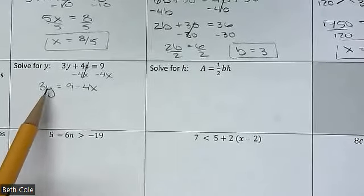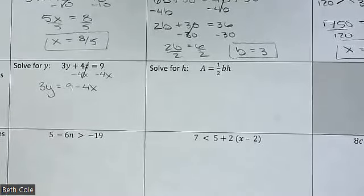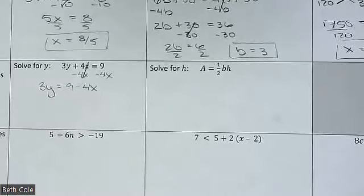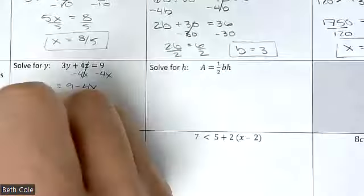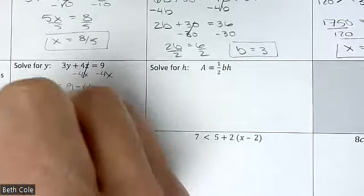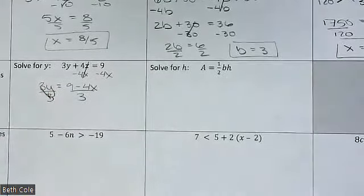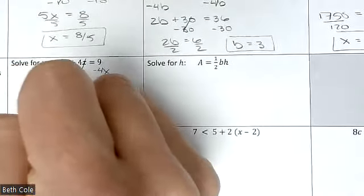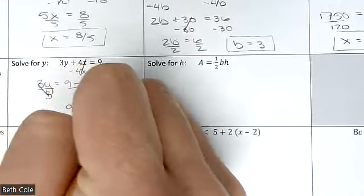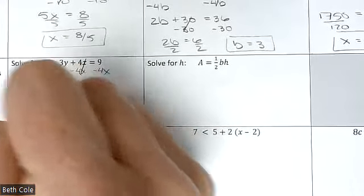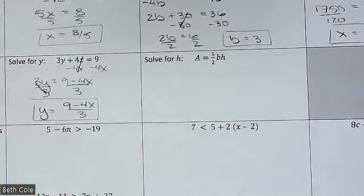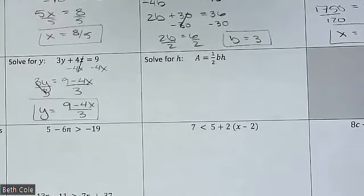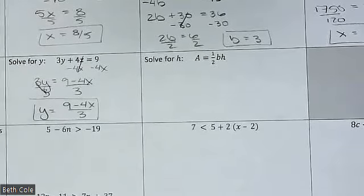And then you do have one more step. 3 is being multiplied to the y, so how do you undo multiply? Divide. And you leave it alone — your answer is just that fraction. The only way you can mess it up is if you try to do something. Just leave it all alone.